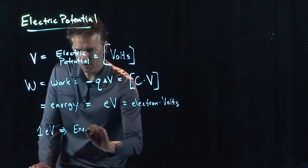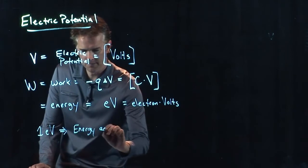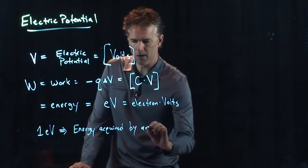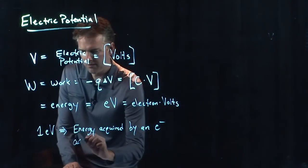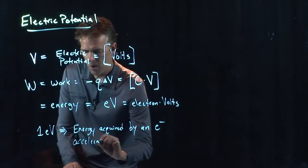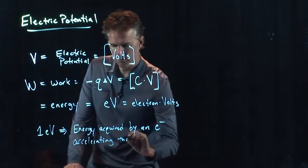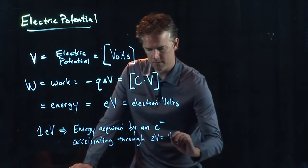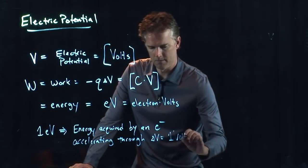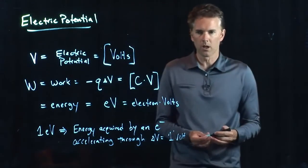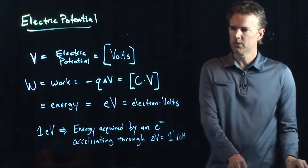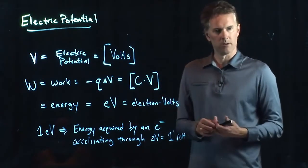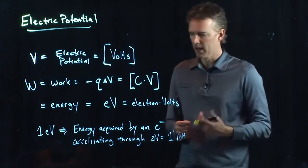So one electron volt means the following: the energy acquired by an electron accelerating through one volt. That's what one electron volt means. You're going to take the electron, you're going to accelerate it through a potential difference of one volt. That's how much energy it requires. It acquires one electron volt.